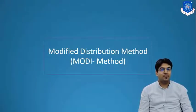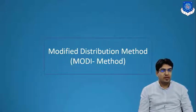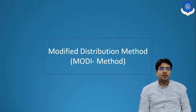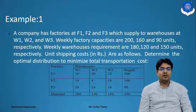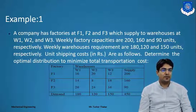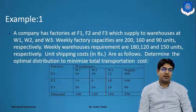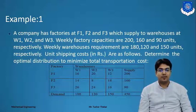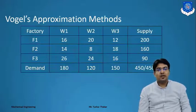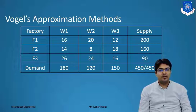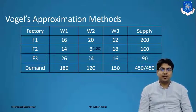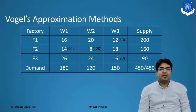This is known as the Modified Distribution Method, or Modi method, also known as the PUV method. For that we have taken an example. A company has factories at F1, F2, and F3, with various warehouses and their supply and demand requirements. We solved this example through the VAM method in the last lecture, and obtained allocations: at 0.8 that is 120, at 0.60 that is 90, at 0.12 that is 60, at 0.40 that is 14, and at 0.60 that is 140. So there are a total of 5 allocations.